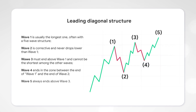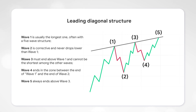Wave 5 always ends above wave 3. When confirming the pattern, two lines that form a wedge are drawn through the tops of waves 1, 3, and 5, and through waves 4 and 2.